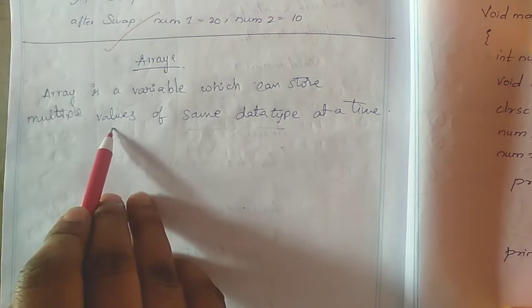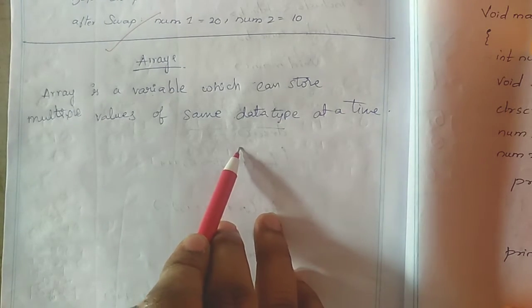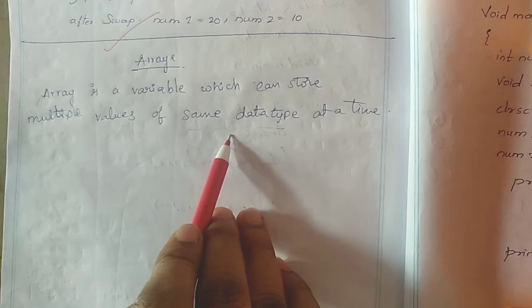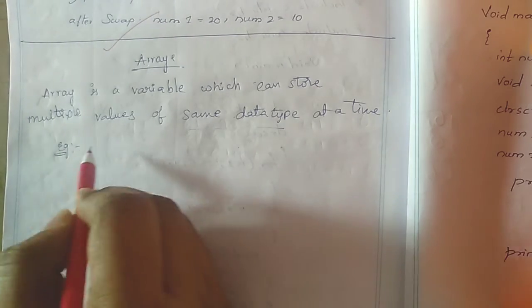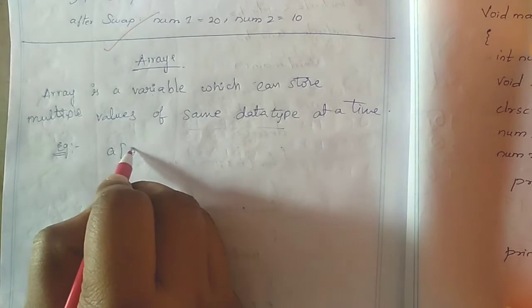We could have all integers, all floating points, or all character values. So let us take an example. This is an array variable.